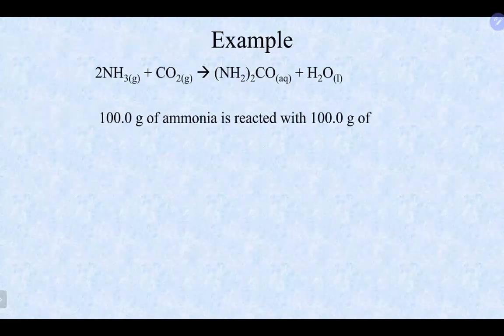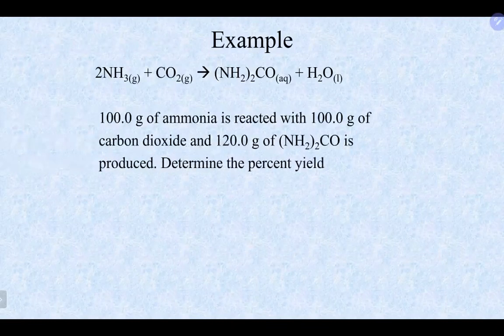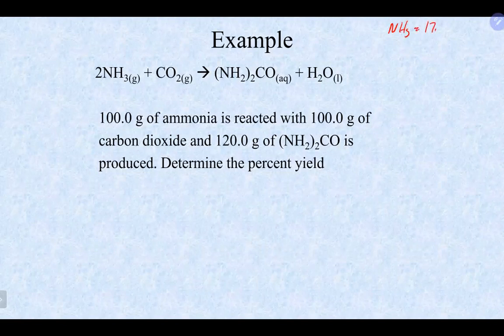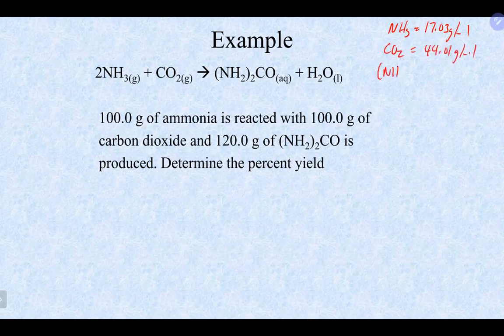Let's do a percent yield example. You take 100 grams of NH3 and react it with 100 grams of CO2, and you produce 120 grams of product. What is the percent yield? Molar masses: NH3 = 17.03 g/mol, CO2 = 44.01 g/mol, product = 60.06 g/mol.